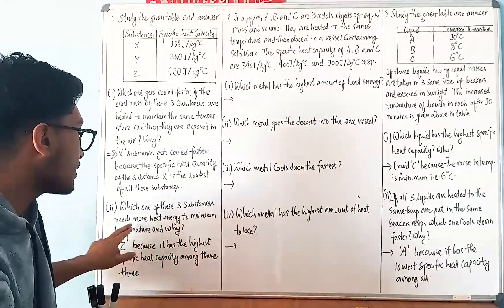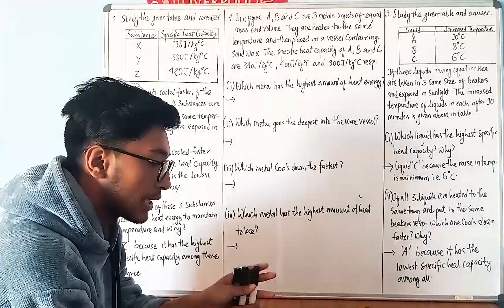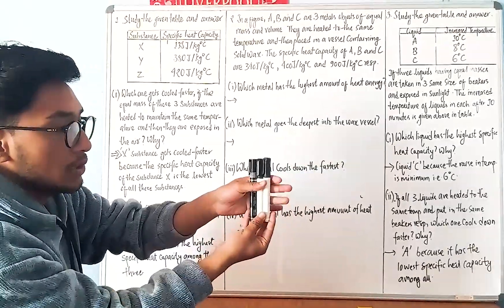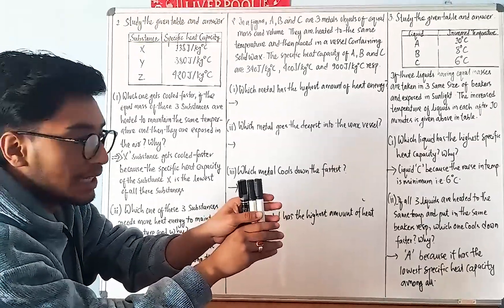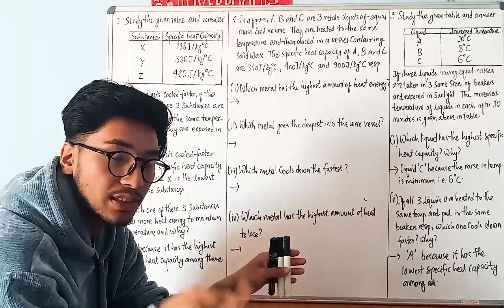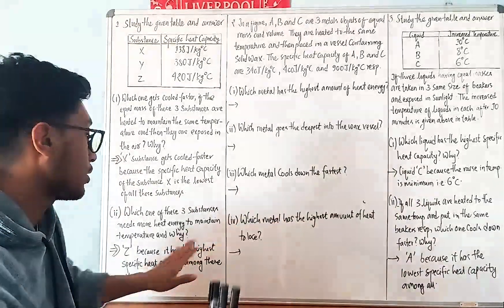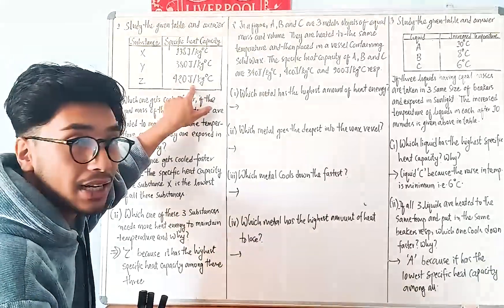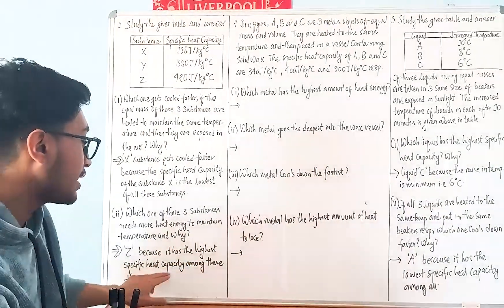Which one of these three substances needs more heat energy to maintain temperature? We need to understand this concept. The answer is Z, because Z has the highest specific heat capacity among the three.